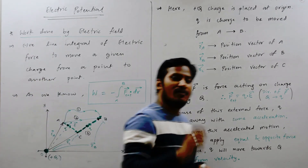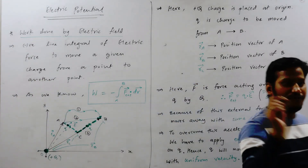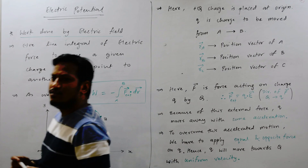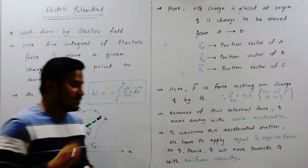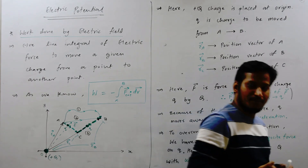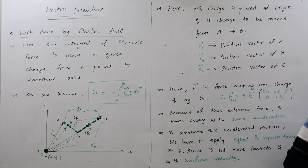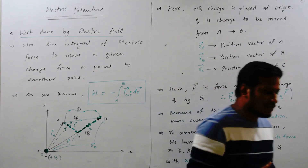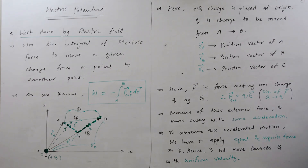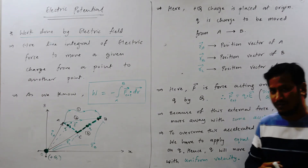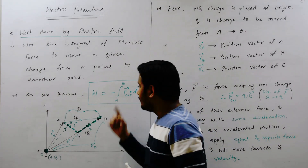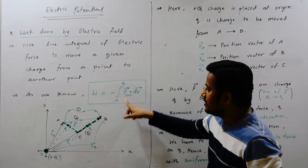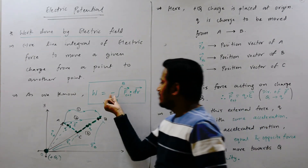In class we have studied that work done equals force dot displacement, but that equation is effectively used only when the force is constant over the path. If the force is variable, then we have to use the second equation of work done, which is the integration of F dot dr. Here the force is variable, hence we use the equation: integration from A to B of F dot dr.